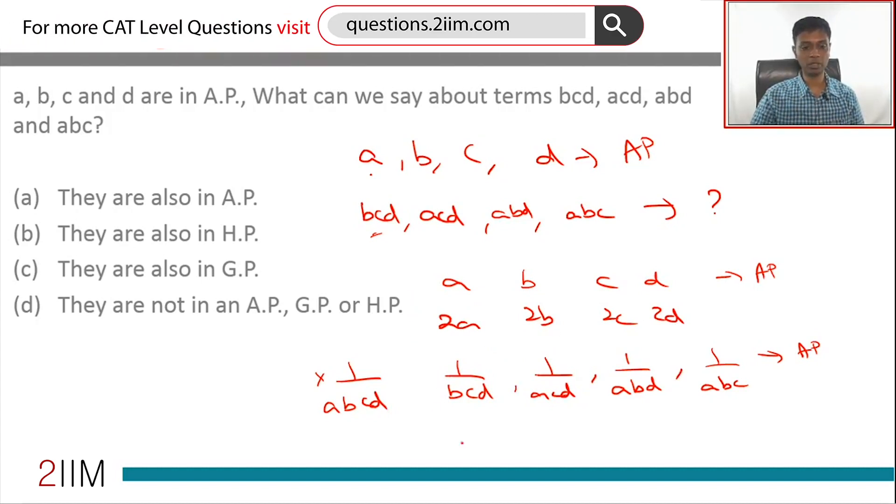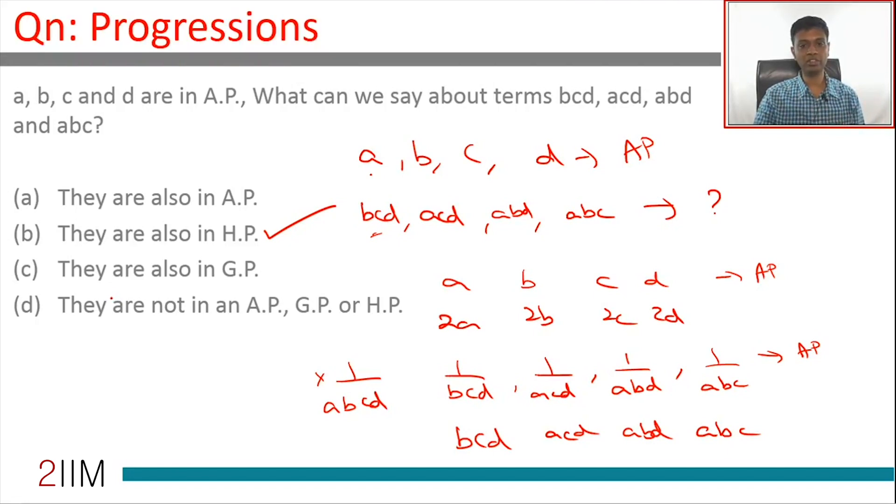1/(bcd), 1/(acd), 1/(abd), 1/(abc) are in A.P. What can we say about bcd, acd, abd, abc? Reciprocals are in A.P. - this particular term is in H.P. So these terms are in harmonic progression. If three terms are in A.P., the reciprocals are said to be in H.P. So if a, b, c, and d are in A.P., then bcd, acd, abd, and abc are in H.P.